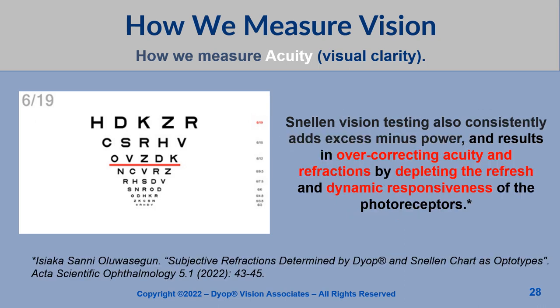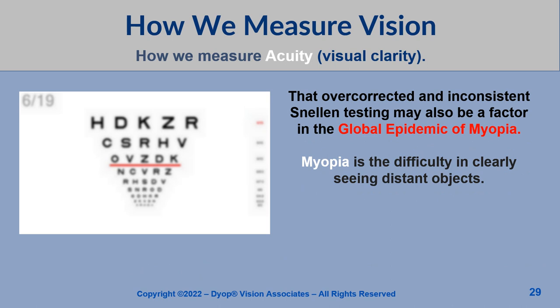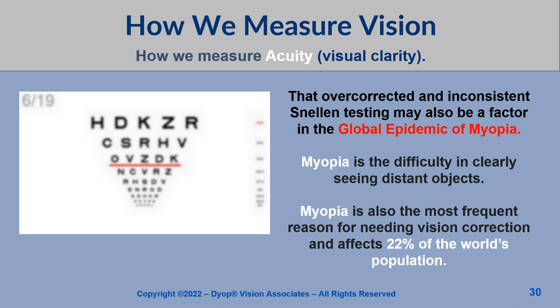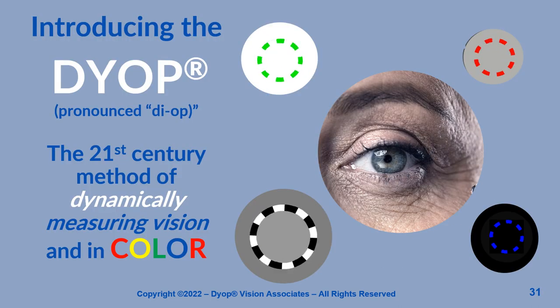Snellen vision testing also consistently adds excess minus power and results in overcorrecting acuity and refractions by depleting the refresh and dynamic responsiveness of the photoreceptors. That overcorrected and inconsistent Snellen testing may also be a factor in the global epidemic of myopia — the difficulty in clearly seeing distant objects — which is the most frequent reason for needing vision corrections and affects 22% of the world's population.